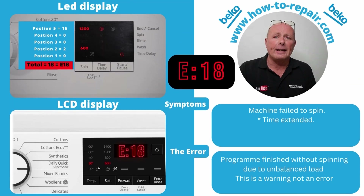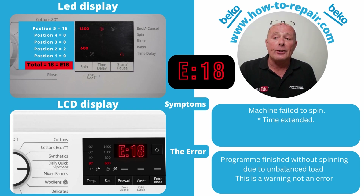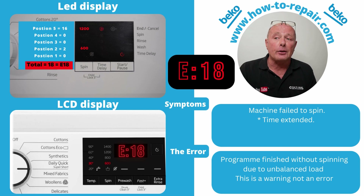Error code 18 is also a warning for engineers, indicating that the machine may have had an excess or imbalanced load placed in the drum. It is displayed as E18 on the LCD; on the LED version, positions 5 and 2 are illuminated, giving a combined value of 18.